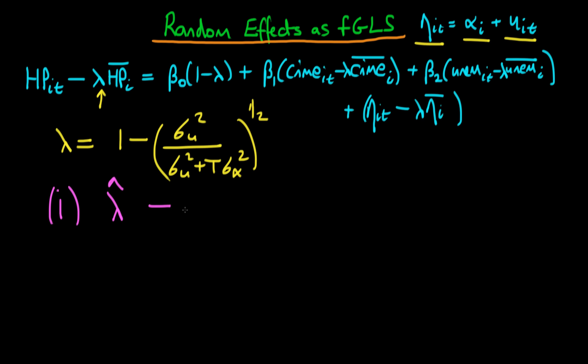The way in which we do this is either via fixed effects or via some sort of pooled OLS. So there's some sort of initial first stage, and from that first stage we get our estimate of lambda, lambda hat.